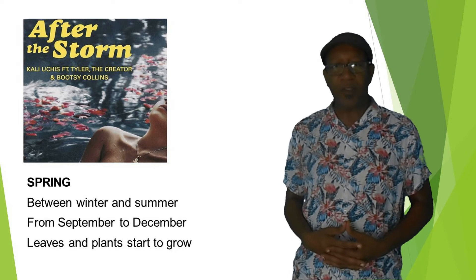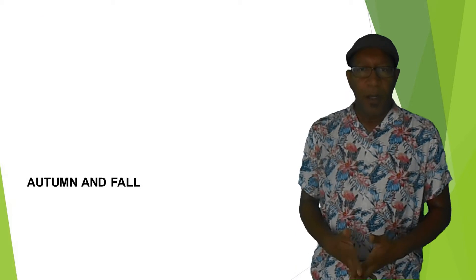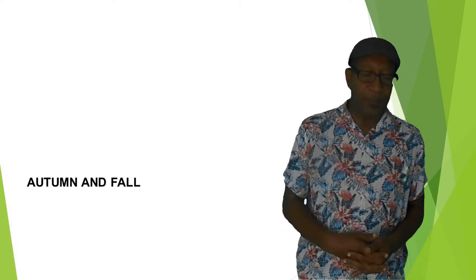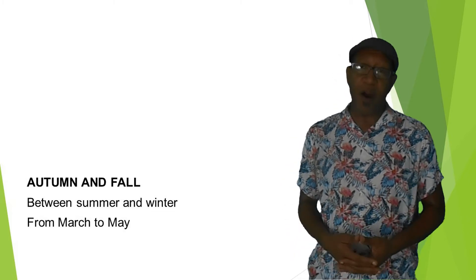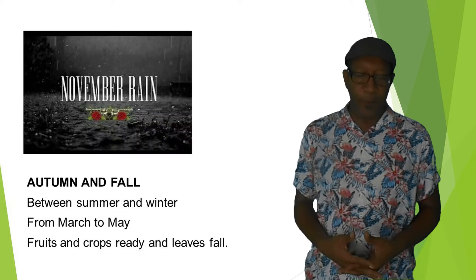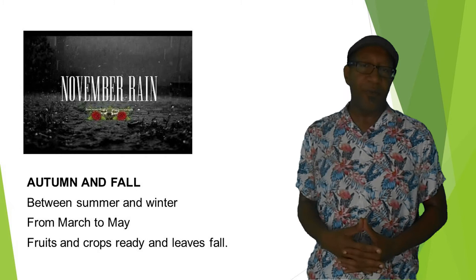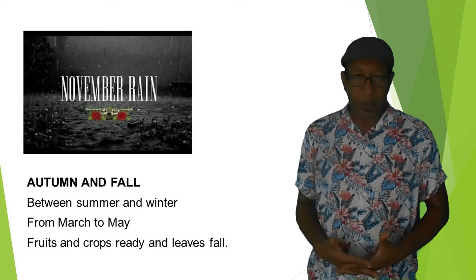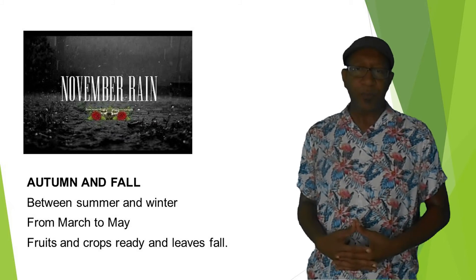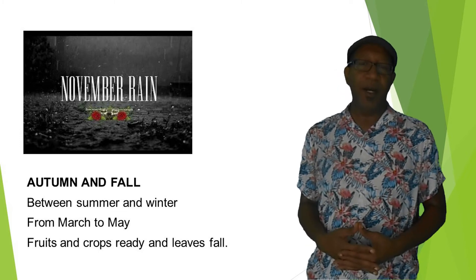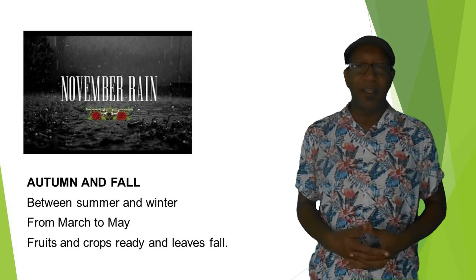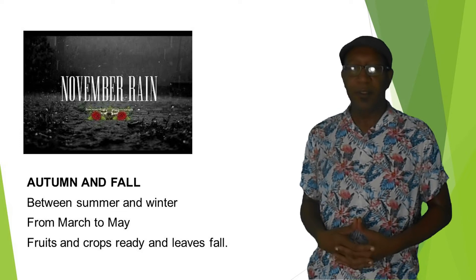These three artists did the song 'After the Storm,' and this song is related to spring. The last season we will be talking about is autumn, also known as fall in the United States — but the names relate to the same season. It happens between summer and winter. In our country, it is from March to May. It is the season where the fruits and crops are ready to be picked and when the leaves fall. In the image here, we have an image for 'November Rain,' a Guns N' Roses song. We have to pay attention to what place we are talking about, because if you are north of the equator it is one thing, but if you are south of the equator — our situation in Brazil — it is different.